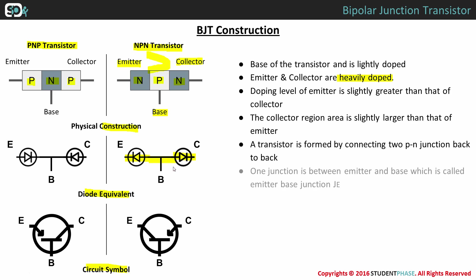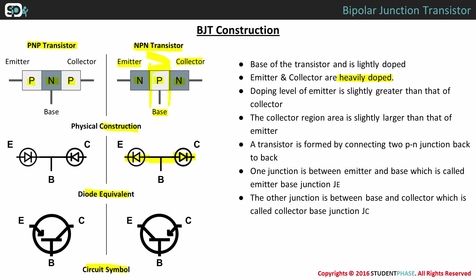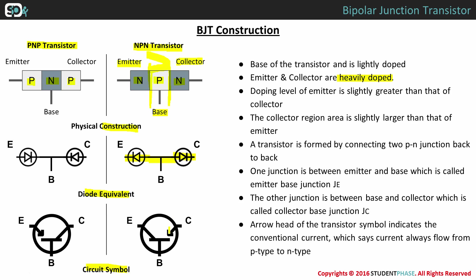There are two junctions in a transistor: one junction is between emitter and base, called the emitter-base junction. The other junction is between the base and collector, called the collector-base junction. The arrowheads represent the flow of conventional current, which is always opposite to the flow of electrons. That means in this transistor, electrons flow in one direction and conventional current flows in the opposite direction.